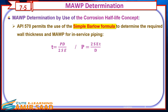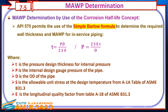MAWP determination by use of the corrosion half-life concept. API 570 permits the use of the simple Barlow formula to determine the required wall thickness and MAWP for in-service piping, where T is the pressure design thickness for internal pressure, P is the internal design gauge pressure, D is the outside diameter of the pipe, S is the allowable unit stress at the design temperature from Table A1A of ASME B31.3, and E is the longitudinal quality factor from Table A1B of ASME B31.3.